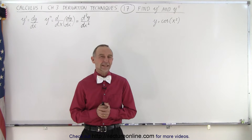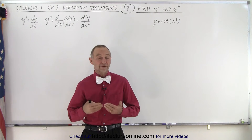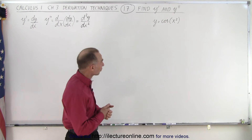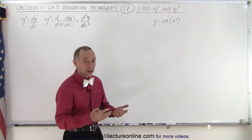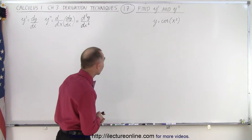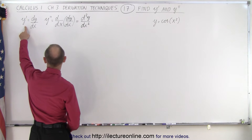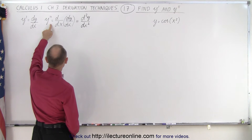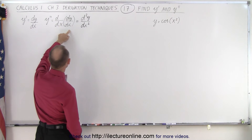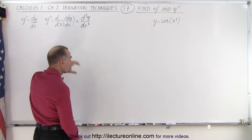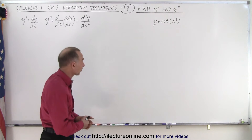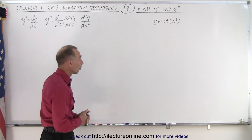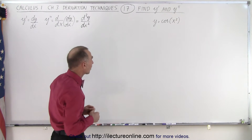Welcome to our lecture online. In this video we're going to show you how to take the first and the second derivative of a particular function. It's kind of a strange looking function, the cosine of x squared, but that's the purpose of the exercise. Remember that the first derivative is equal to dy/dx, the d/dx of y, but the second derivative is the d/dx of the dy/dx. So we take the derivative of the first derivative to get the second derivative. So let's go ahead and first find the first derivative.